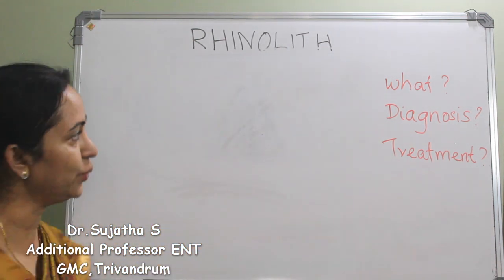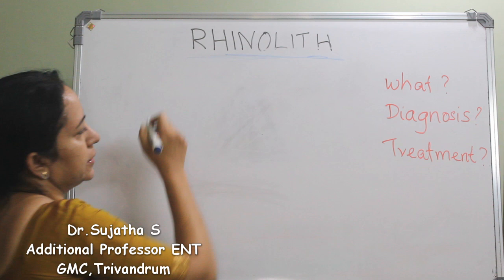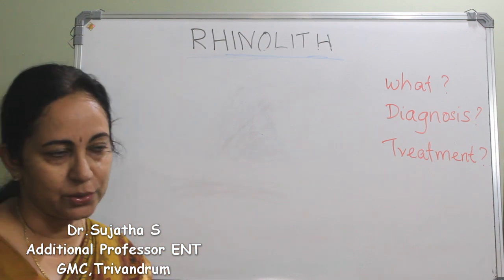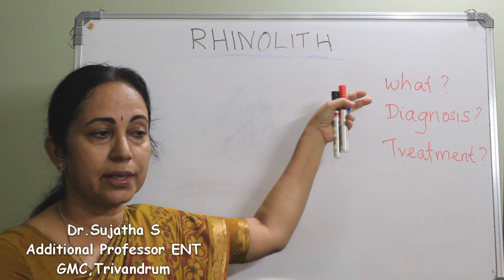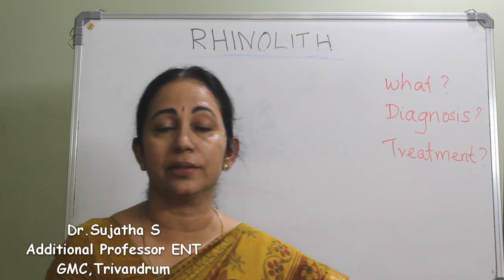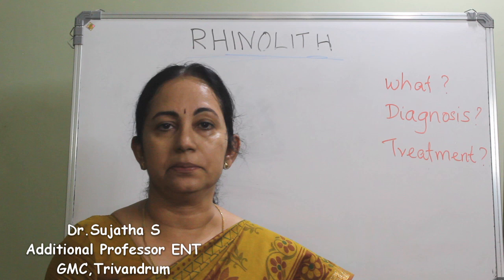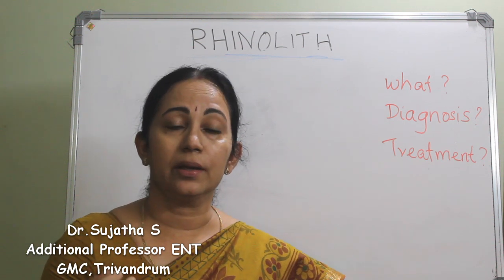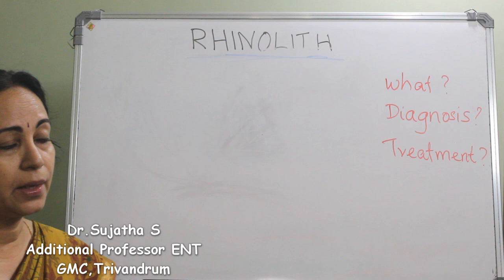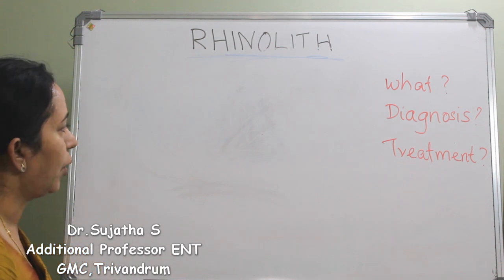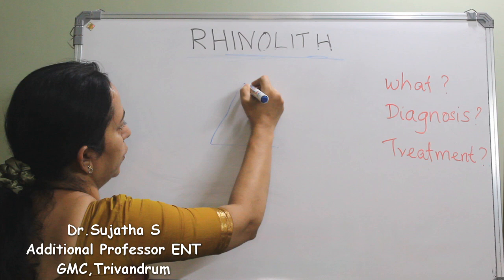Rhinolith is a common short note topic for both undergraduates and postgraduates and is quite common in clinical practice. A rhinolith, in simple terms, is a partially or totally calcified mass of tissue within the nose. This can be formed around a foreign body in the nose or it can develop de novo.